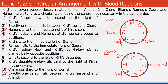Look at statement 8 now. It says that Ish sits second to the left of Kirti's daughter. In Case 1, Ish is here — if he sits second to the left of Kirti's daughter, Charu must be the daughter of Kirti. So let's write daughter here. In Case 2, applying the same condition, Ish is sitting second to the left of Kirti herself, which means he cannot be sitting second to the left of Kirti's daughter — so Case 2 is not possible. It violates the conditions, and Case 1 is our definitive case.